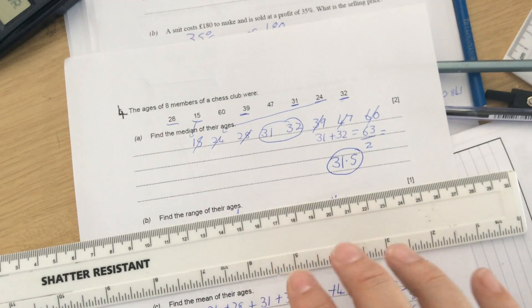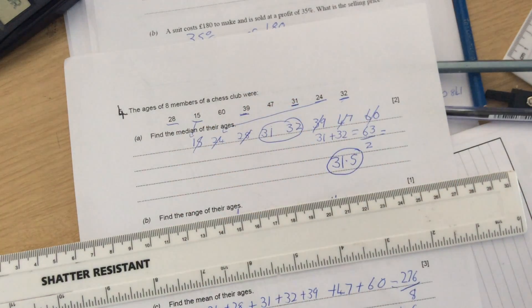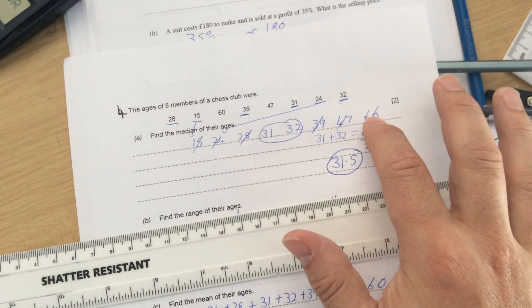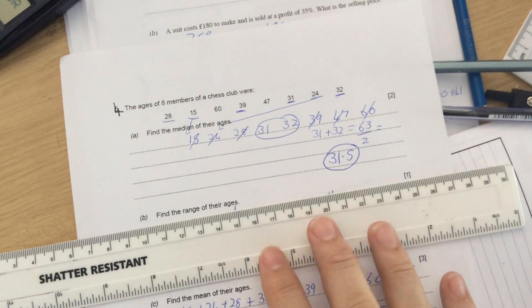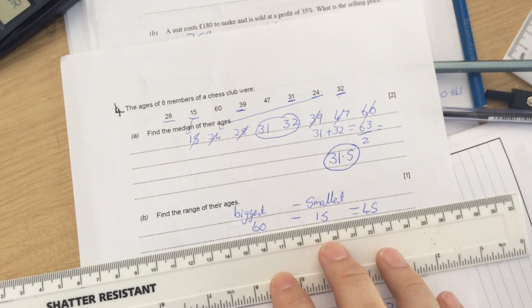When you're doing the range of numbers, it's the biggest take away smallest. If you remember the song, hey diddle diddle, the median's in the middle, you add and divide for the mean, the mode is the most, but wait there's one more, the range is the difference between. So the range would be the biggest number, which is 60, take away the smallest number, which is 15. So 60 take away 15 is 45.